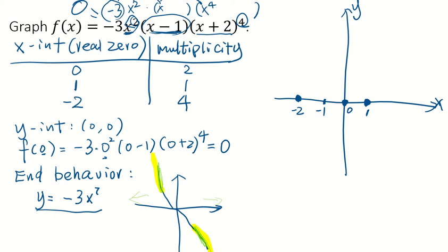The multiplicity for 0 is 2. That means our graph will just touch the x-axis without passing it. Let's start from the end behavior. The end behavior is like this. So starting from negative infinity, you will start from here. And then when we reach negative 2, since the multiplicity is 4, which is even, it won't pass it. It will just touch the x-axis and go back.